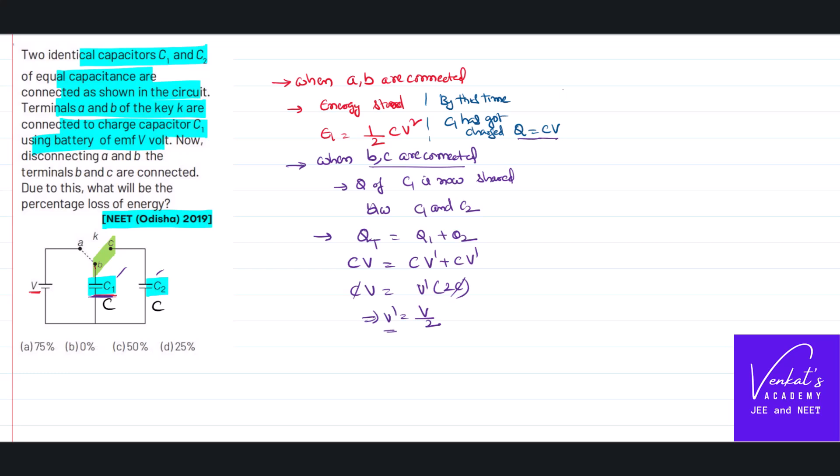Now I can get new energy stored in the capacitor. Let us write the new energy stored in the capacitor. Energy of system now is energy in the first capacitor and energy in the second capacitor. In the first capacitor, half C, V is V by 2 as we have derived.